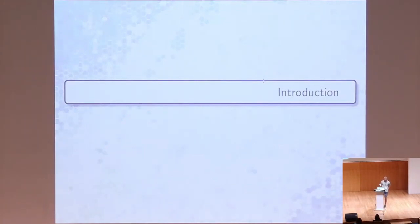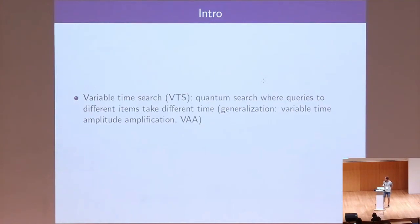So what is variable time search? Variable time search is a type of quantum search where we allow for the situation that some items to be checked require more time than others.